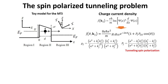Hence the tunneling spin polarizations are crucial for the description of the angular dependence of the MTJ resistance. In fact, if these polarizations are zero, there will be no difference between the currents in the parallel or anti-parallel configuration, and the tunneling magnetoresistance ratio would be zero.